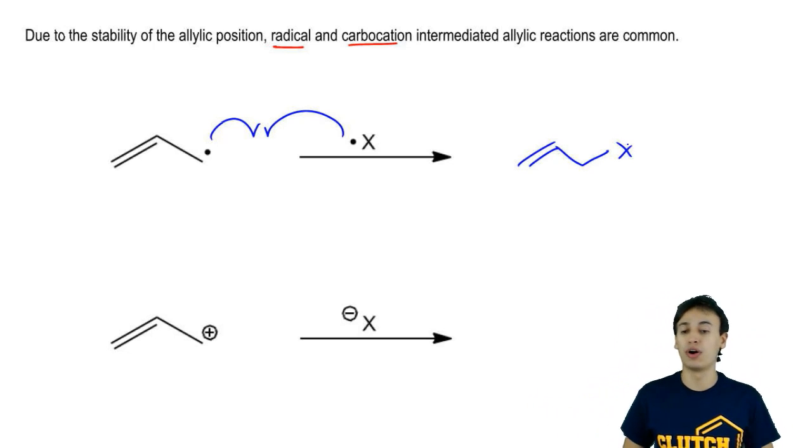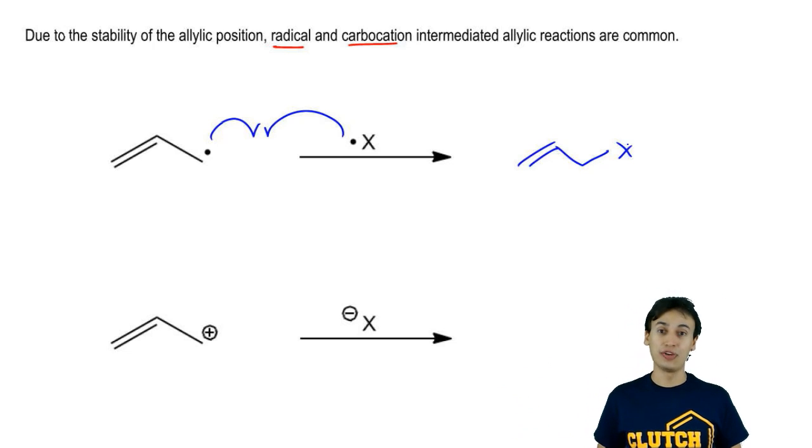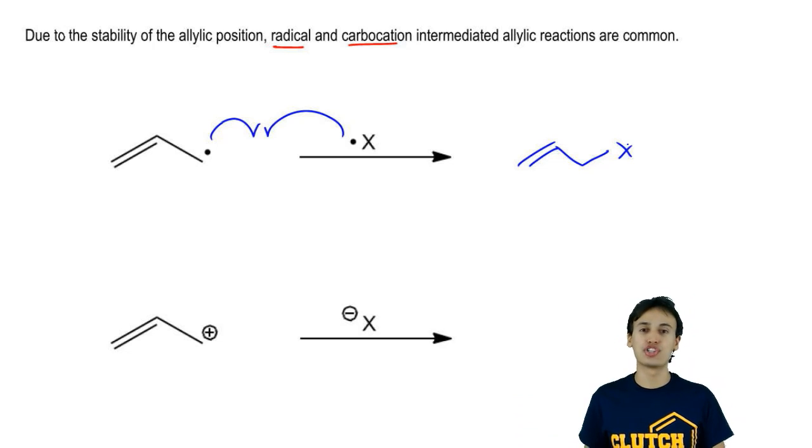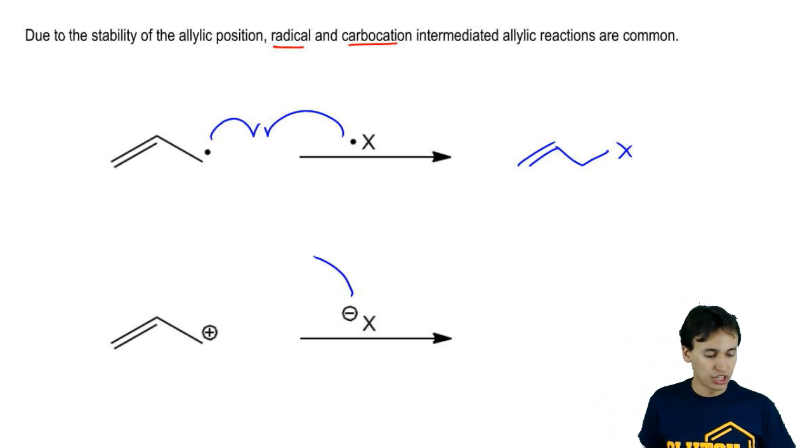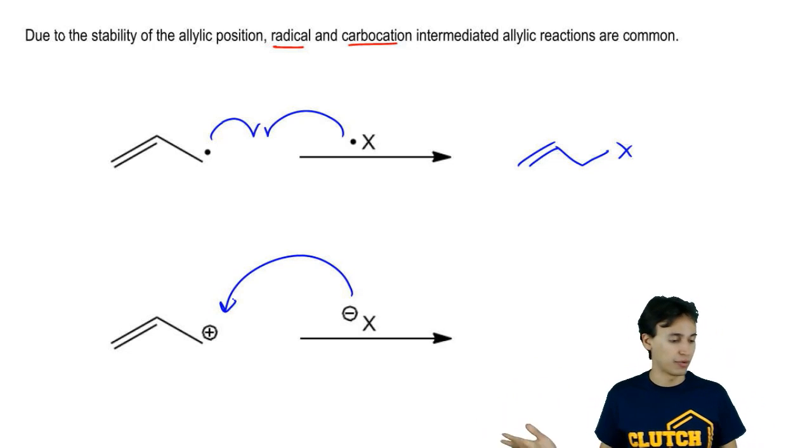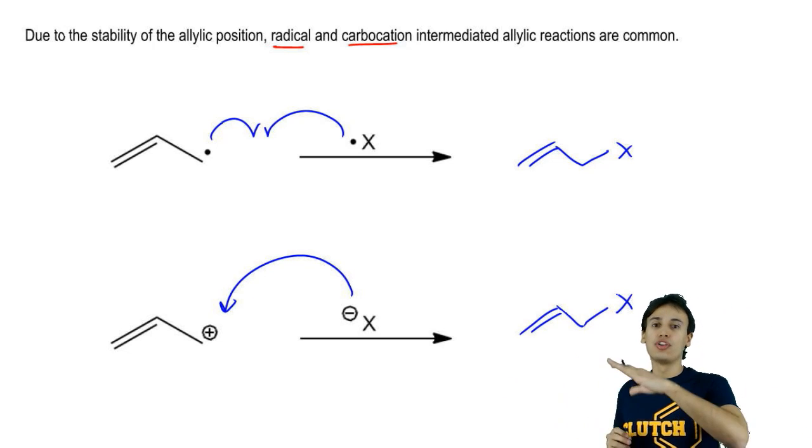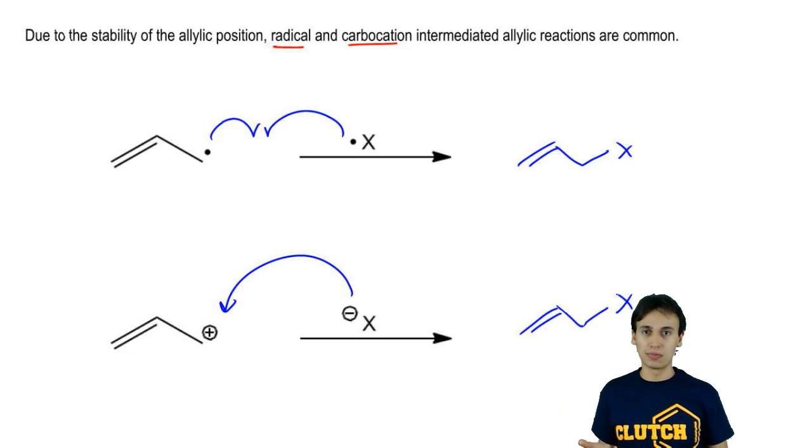Another possibility would be what if you had a carbocation form on that allylic position and reacted it with something negatively charged or with an available lone pair. Then you could get basically a nucleophilic attack on that reaction site. We would form pretty much the same exact compound in this case just due to two different mechanisms.